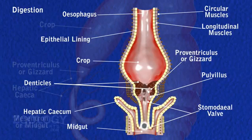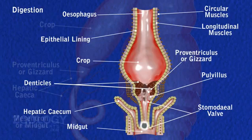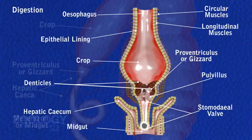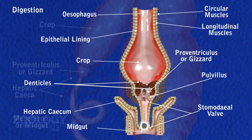This membrane is secreted by the stomodeal valve of the gizzard. It protects the delicate lining of the midgut from scratching by the hard, indigestible components of food. It is, however, permeable to enzymes as well as digested food.